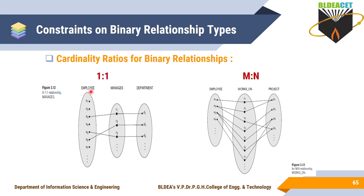A 1:1 ratio means one entity of one entity type is related with only one entity of another entity type. For example, 'Employee Manages Department' — only one employee can manage a department, and for one department there is only one manager. So E3 manages D1 and E5 manages D3. This is the 1:1 cardinality ratio.